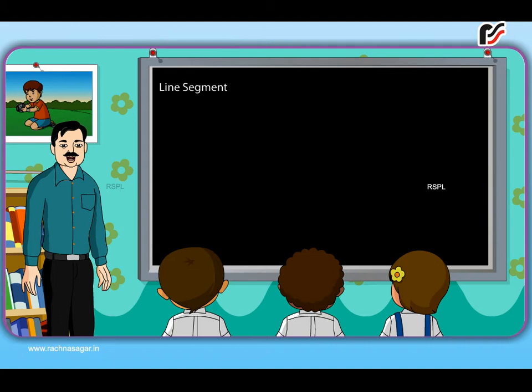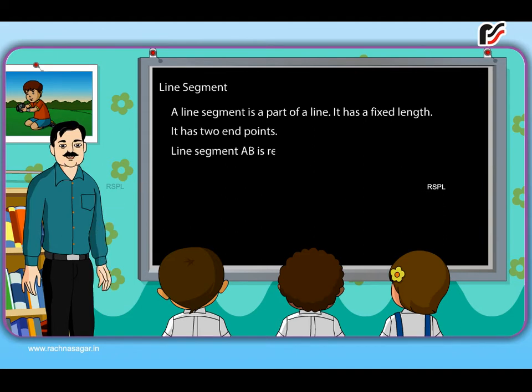Line segment. A line segment is a part of a line. It has a fixed length. It has two end points. Line segment AB is represented as AB.